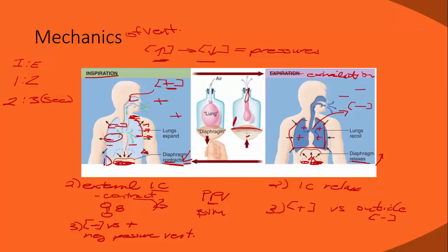For exhalation: the diaphragm relaxes and moves up due to abdominal contents pushing on it; intercostal muscles relax and move back inward. That causes the inside of the chest to become more positive because the same volume of air is now in a smaller container, increasing pressure and causing air to move out.